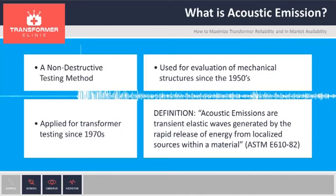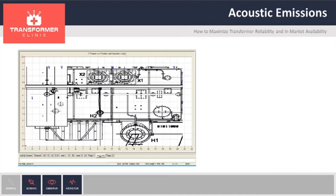One of the techniques I'm going to be talking to you about is acoustic emission. Acoustic emission has been around since the 50s. It has been used for mechanical evaluation of structures, looking for cracks, corrosion. In power transformers, it has been used since the 70s. It was applied by Westinghouse during induced voltage tests and has been evolving since. Here we're looking at the top view of a transformer. We do this test with the transformer in service, which is one of the advantages of the technique.